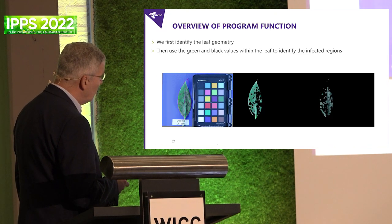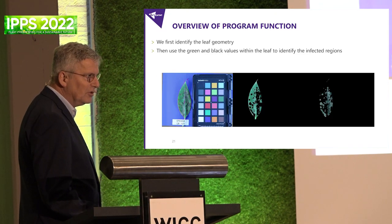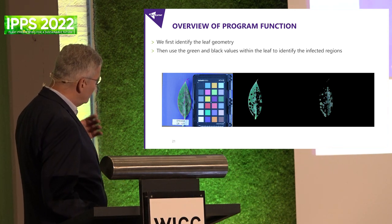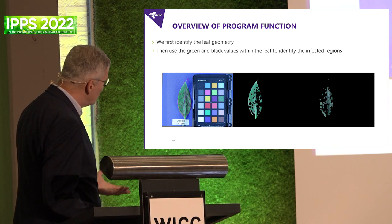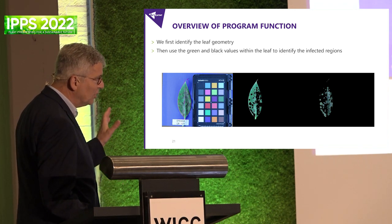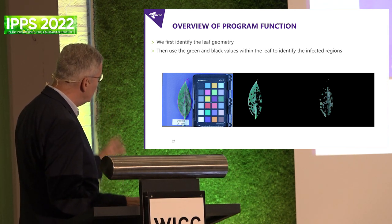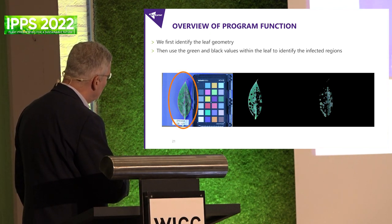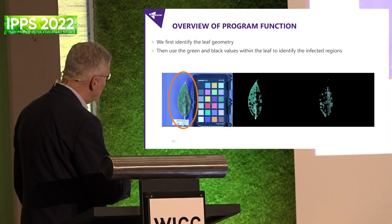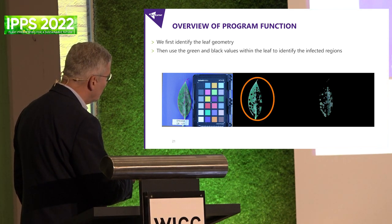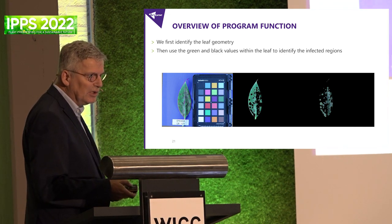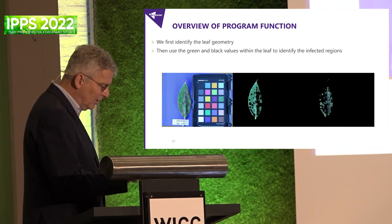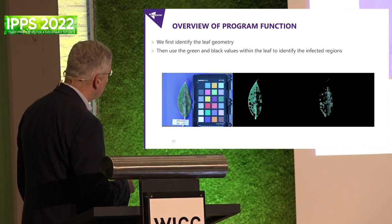The way we process these phenotypes is by a system developed by KeyGene. Here you see the infected leaf - we capture the image, we have the green area and the infected areas, all being quantified. That way we build up databases with quantitative data for gene mapping and identification.